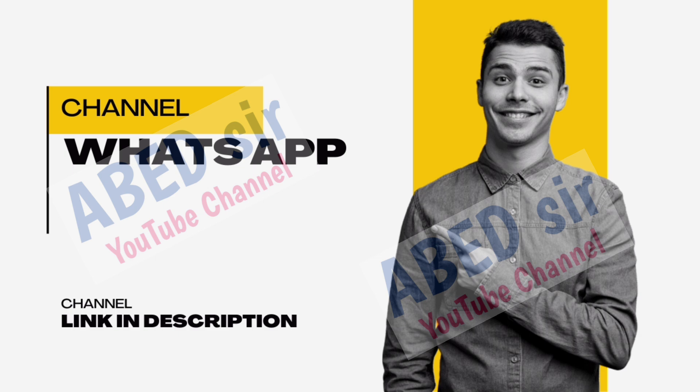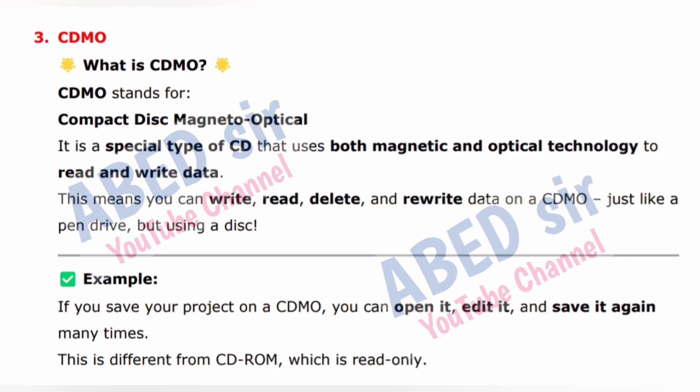Next important short question: What is CDMO? CDMO stands for Compact Disc Magneto Optical. It is a special type of CD that uses both magnetic and optical technology to read and write data. This means you can write, read, delete and rewrite data on a CDMO — just like a pen drive but using a disk. Example: if you save your project on a CDMO, you can open it, edit it and save it again many times. This is different from CD-ROM, which is read-only.